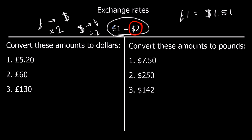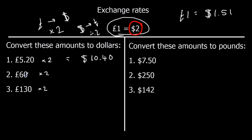And that will answer any exchange rate question. So we're going to convert these amounts to dollars — pounds to dollars is times by the exchange rate, we're going forwards, so we're multiplying by the exchange rate, in this case 2. So I'm going to times these numbers by 2, and that's going to convert them into dollars. So £5.20 times 2 gives me $10.40. £60 times 2 is $120, because 60 times 2 is 120. And 130 times 2 is 260.